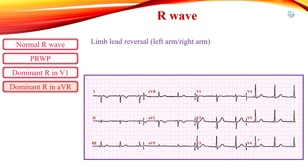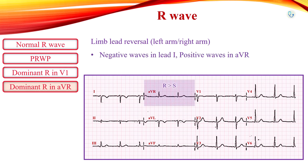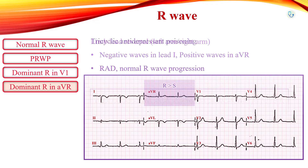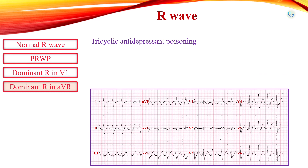In incorrect limb lead placement with reversal of the left and right arm electrodes, a similar pattern to dextrocardia in the limb leads can be observed. In left and right arm lead reversal, lead I shows completely inverted waves, AVR often becomes positive with a dominant R-wave, and there may be marked right axis deviation. In contrast to dextrocardia, there is normal R-wave progression in the precordial leads.